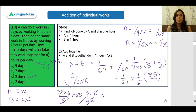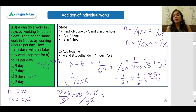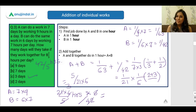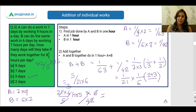That covers all variations in the addition of individual work category. Whenever given the time taken by two or more laborers, find the reciprocal (work per unit time), add them using LCM, then take the reciprocal again to get the combined time. We'll be solving many more problems and looking at various types of time and work questions in later videos. Thank you.